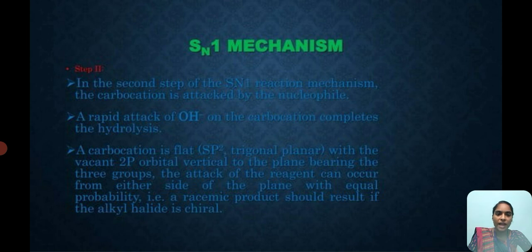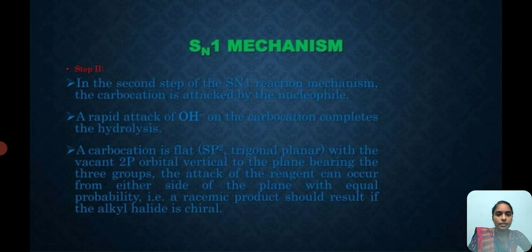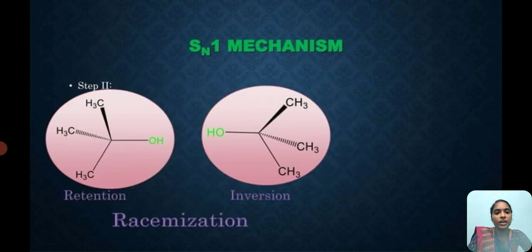The carbocation is flat, i.e., sp2 trigonal planar, with the empty 2p orbital perpendicular to the plane bearing the three groups. The attack of the reagent can occur from either side of the plane with equal probability. So the racemic product should be the result. If the alkyl halide is chiral, you can get either a retention product or an inversion product.